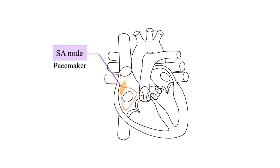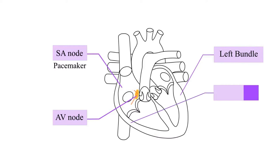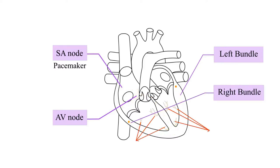The electrical current travels through the heart from the sinoatrial node through the atria downward to the atrioventricular node. The electrical current then travels down the atrioventricular septum and, lastly, up the walls of the ventricles through the Purkinje fibers.